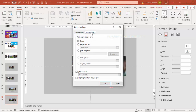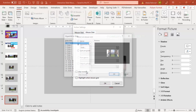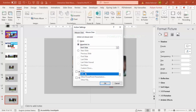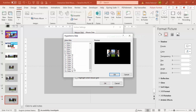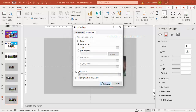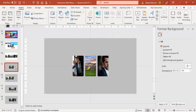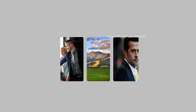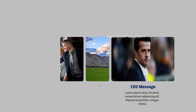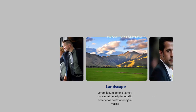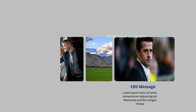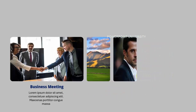On slide 18, set the first image: Action, Mouse Over, Hyperlink to Slide 16, click OK. Set the second image: Action, Mouse Over, Hyperlink to Slide 17, click OK. We're done! Go to slide 15 and run the slideshow — when you bring the mouse over any image it will enlarge. Move to another image and it enlarges too. Any image you hover over will enlarge without clicking.